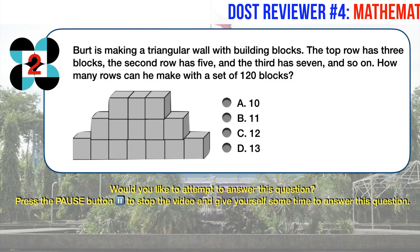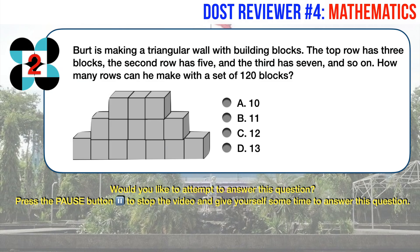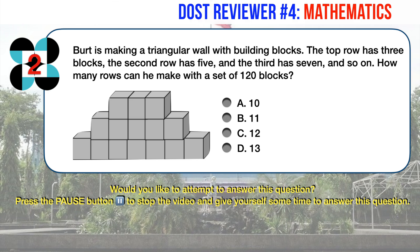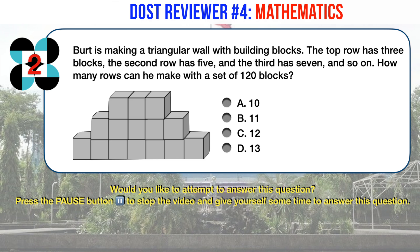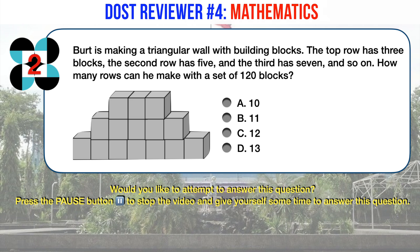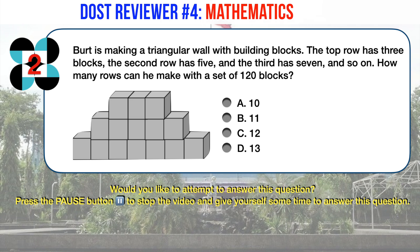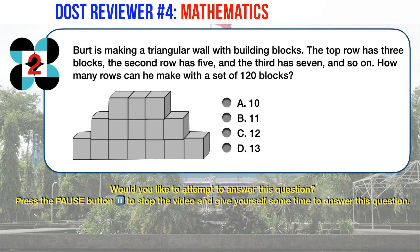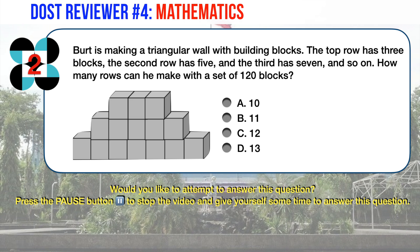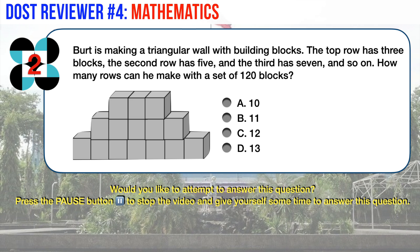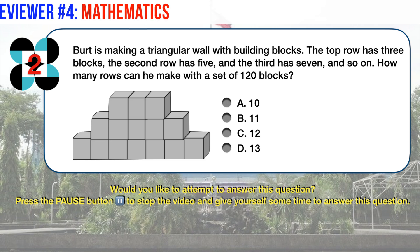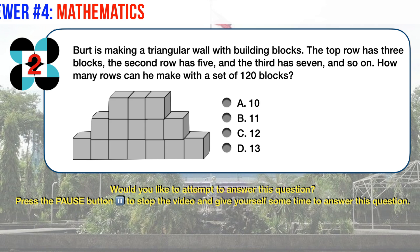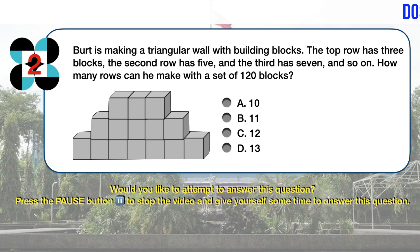Math question number 2. Bert is making a triangular wall with building blocks. The top row has 3 blocks, the second row has 5, and the third has 7, and so on. How many rows can he make with a set of 120 blocks?